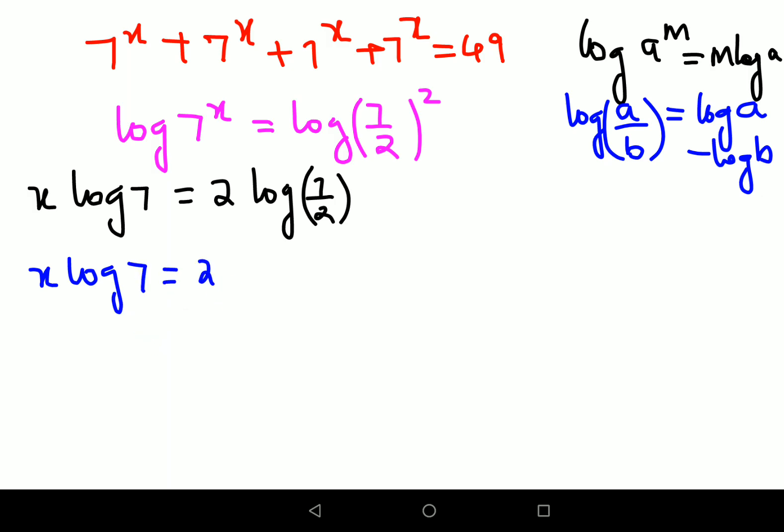Now, since we want to find the value of x, we'll divide both sides by log(7). So the answer comes out to be x = 2(log(7)/log(7) - log(2)/log(7)).